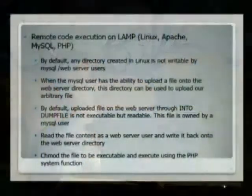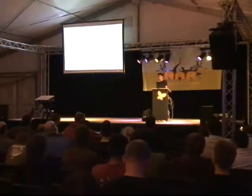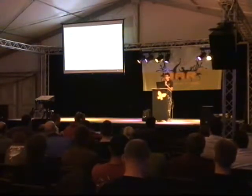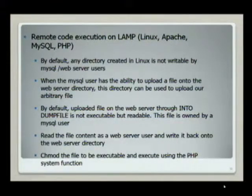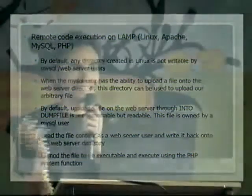Now I'm going to show how we can conduct remote code execution on a LAMP stack. On the web platform, by default, directories created in Linux are not writable, but in some cases you will find applications that require a directory to be writable — a good example being applications that allow user content uploads. If you can find this directory, you can upload your file. Since a file uploaded via INTO DUMPFILE is not executable by default, you can use a PHP script to read the file contents, write into another file, use the PHP system function to change the file permission, and then execute your executable code.